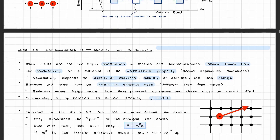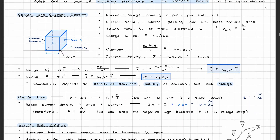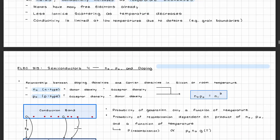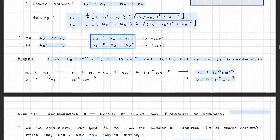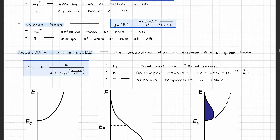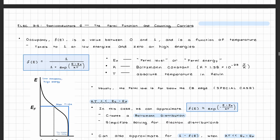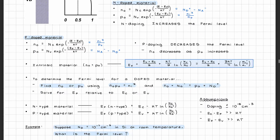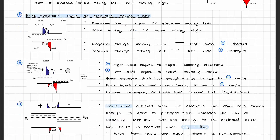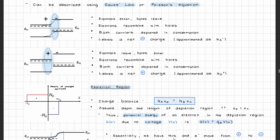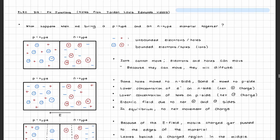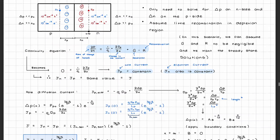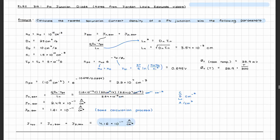We then moved on to semiconductors, covering bonds and doping to create p-type and n-type regions in semiconductors, what a band diagram looks like for both p-type and n-type materials, electron mobility and conductivity, the relationship between conduction and temperature, the relationship between doping densities and carrier densities. We also learned about the Fermi function, Fermi-level calculations, and what happens when you bring an n-type and a p-type material into contact, and what the band diagrams look like for a p-n junction.